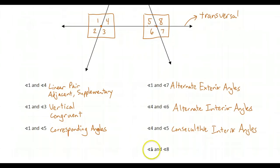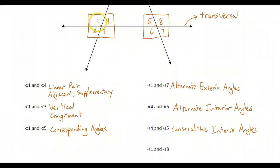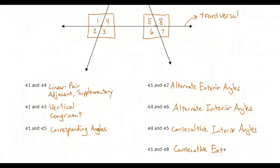Finally, angles one and eight: one is exterior, outside of the two lines, and eight is also exterior. They're both on the same side of the transversal, so they are same-side exterior angles — in fact, consecutive exterior angles. Your book doesn't go that far to include consecutive exterior angles, but I want you to realize they are out there and you might see them in the future.